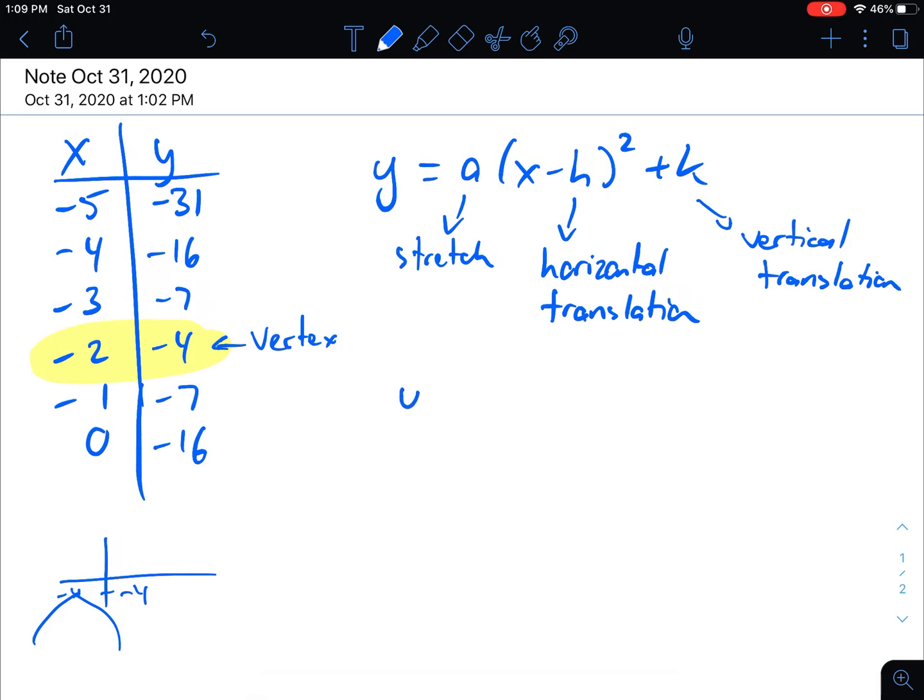So the h and the k I know based off where that vertex is. If I use that point, I can write this. I can write y equals a bracket, I can write x plus 2 squared minus 4. Your typical vertex is 0, 0. In this case, our vertex is negative 2, negative 4.